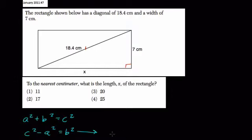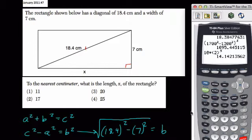And here c squared is just going to be 18.4 squared minus 7 squared, or 49, equals b squared. But I want to say b then is equal to the square root of all this. Right, think about that, if b squared equals this, then b equals the square root of that.